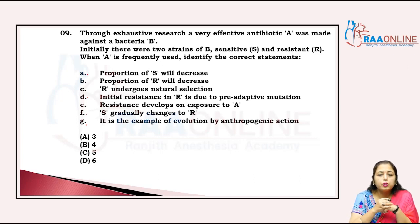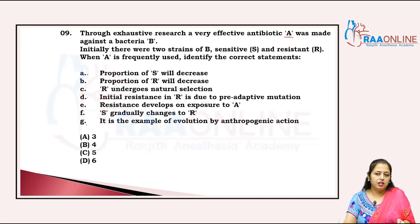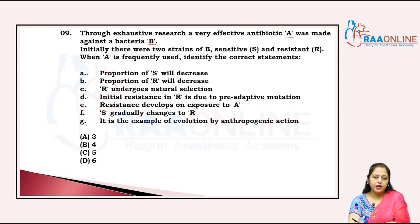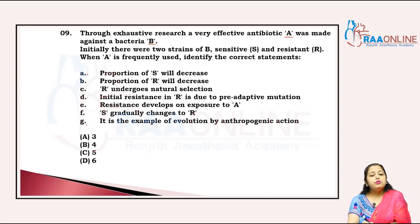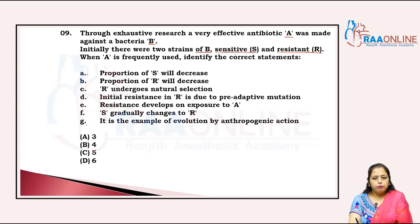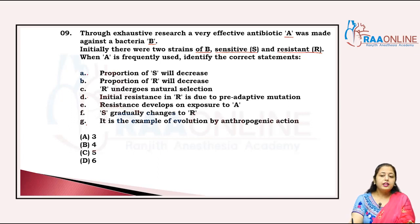Through exhaustive research, a very effective antibiotic A was made against bacteria B. This is a value-based question. Initially there were two strains of B: sensitive — bacteria that the antibiotic kills — and resistant R, meaning there is no effect of the antibiotic on these bacteria.